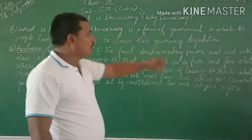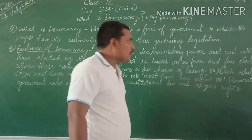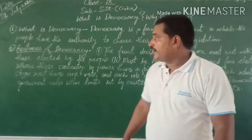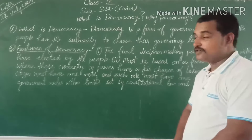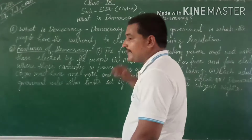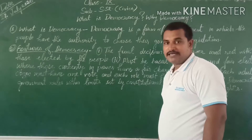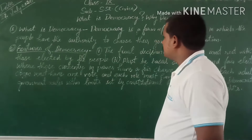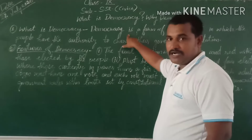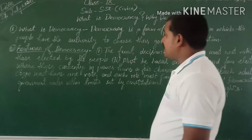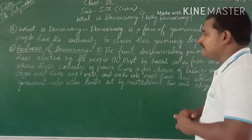So let's start with the first question: what is democracy? Democracy is a form of government in which the people have authority to choose their governing legislation. Now, how many kinds of government are there? As I talked about in the last classes, there are three types of governments. You have to reply to me in writing — what are the three kinds of government?